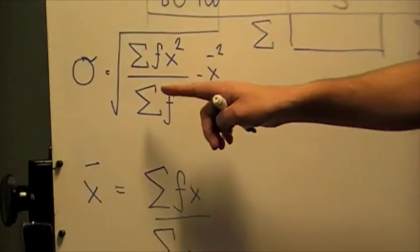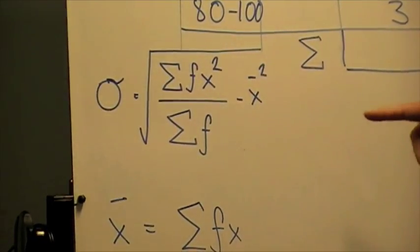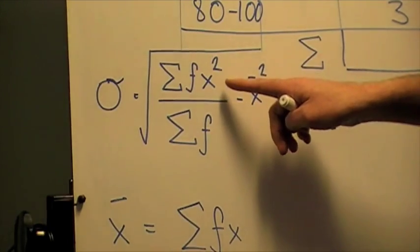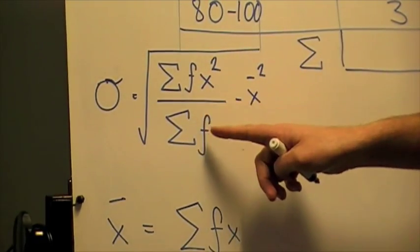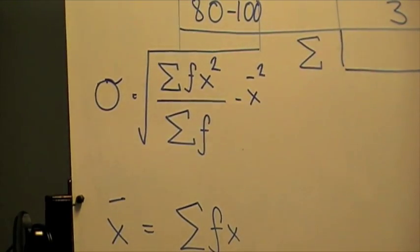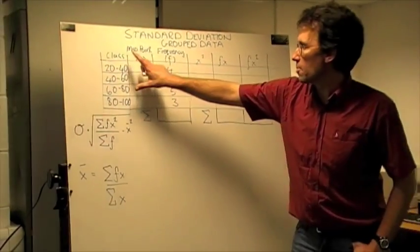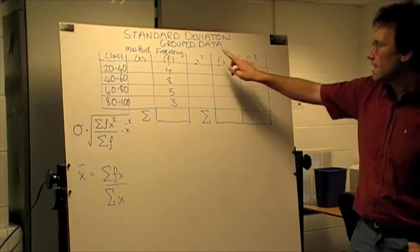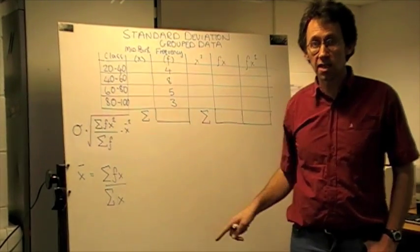where we're looking at the sum of the frequency multiplied by the midpoint squared divided by the sum of the frequency minus the mean squared. So the first thing that we've got to do is create a table with the correct headings in so we can populate this formula nice and easily.